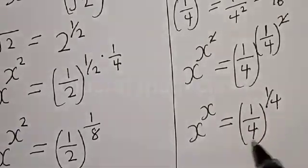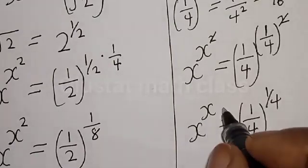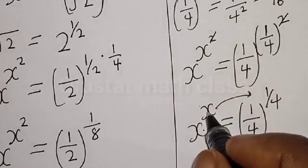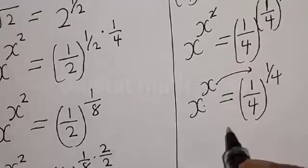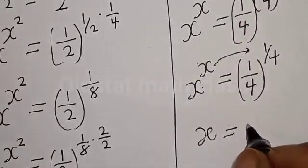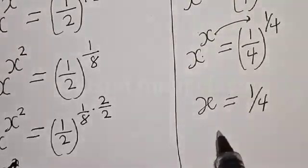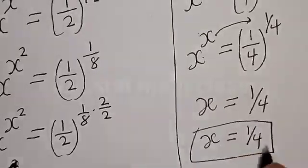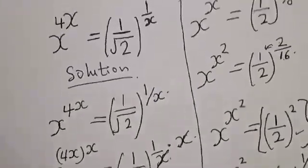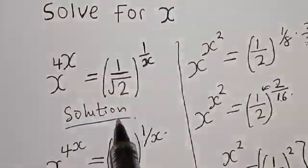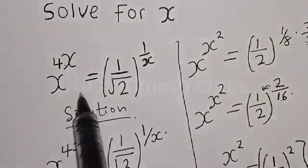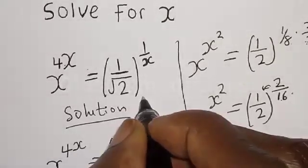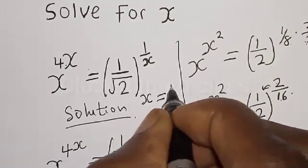By comparing both sides, we have x equal to 1 divided by 4 on the base, and x equal to 1 divided by 4 in the exponent. Therefore, x is equal to 1 over 4. From the given question, we were asked to solve for x in x raised to the power of 4x equal to 1 divided by root of 2 raised to the power of 1 divided by x. Our final answer is x is equal to 1 divided by 4.